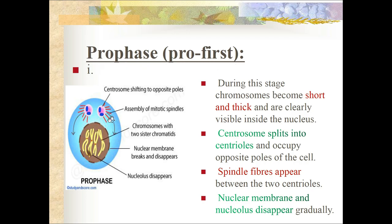During prophase, the centrosome splits into centrioles which move to and occupy the opposite poles of the cell. Spindle fibers appear between the two centrioles. The nuclear membrane and the nucleolus in the nucleus gradually disappear.